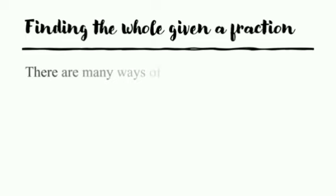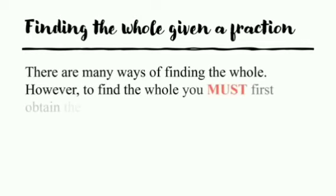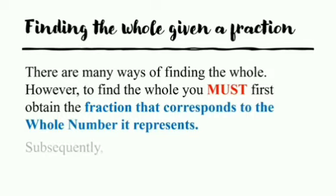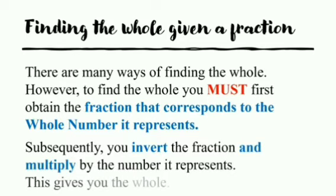There are many ways of finding the whole. However, to find the whole, you must first obtain the fraction that corresponds to the whole number it represents. Subsequently, you invert the fraction and multiply by the number it represents. This gives you the whole.